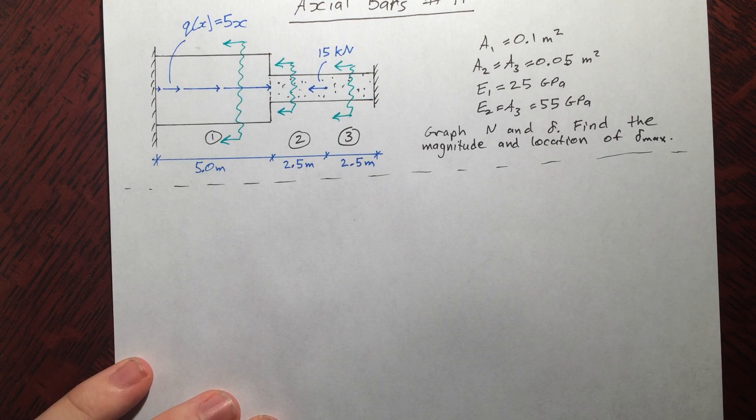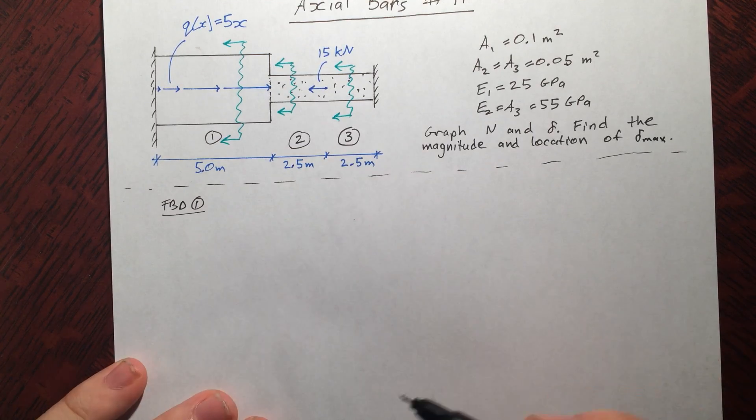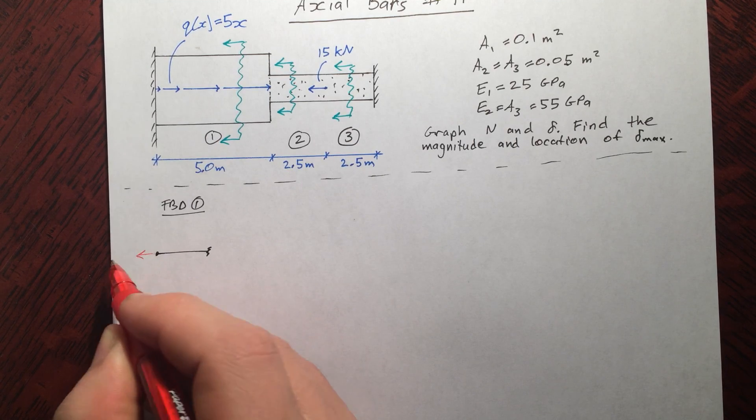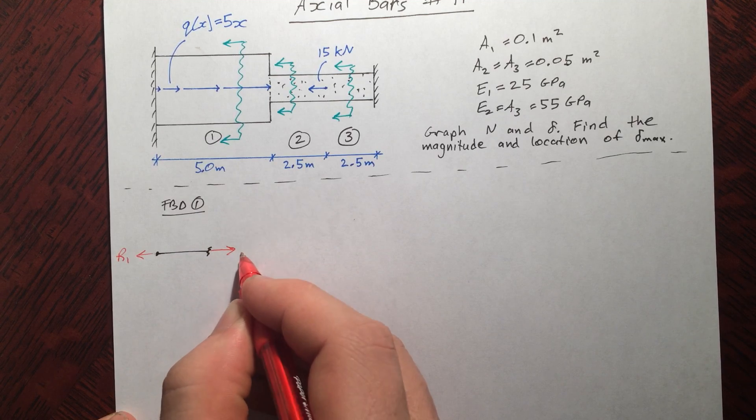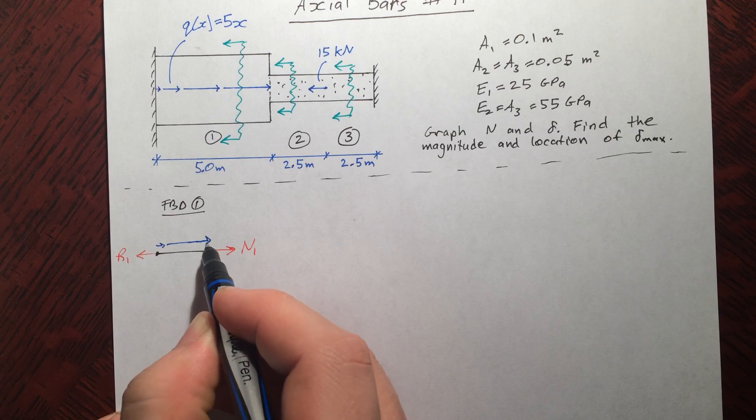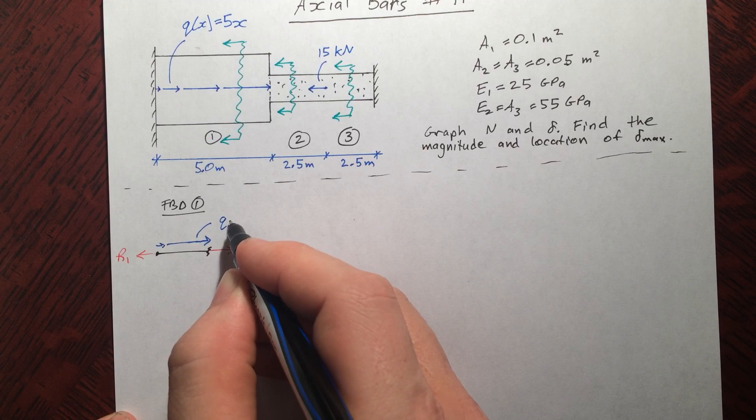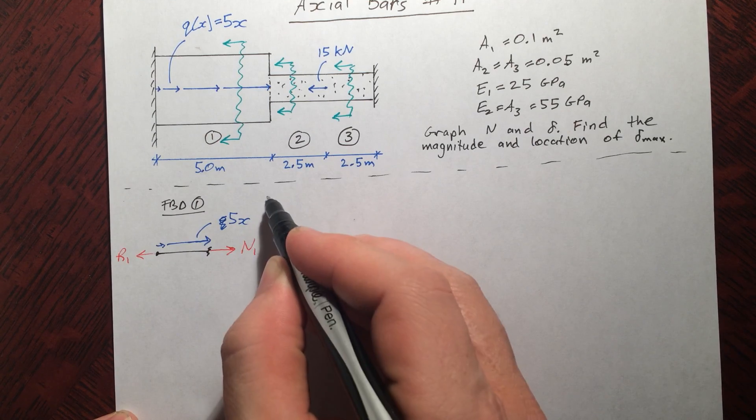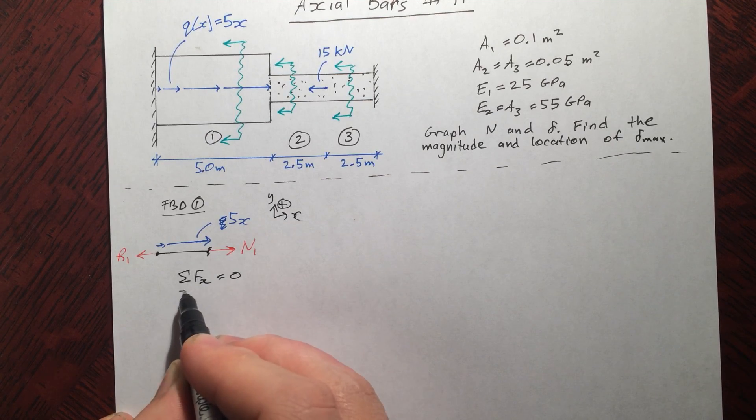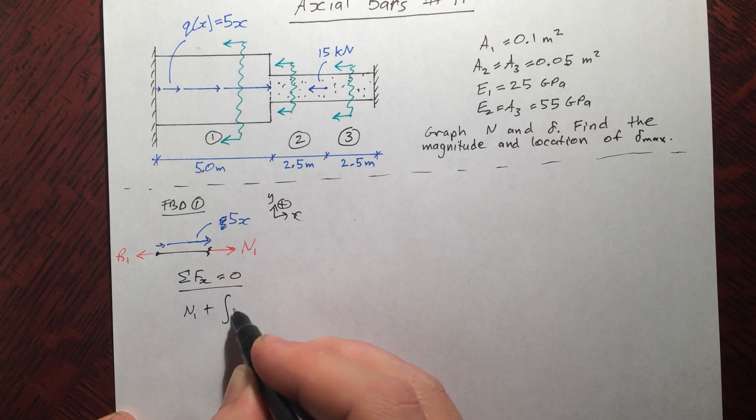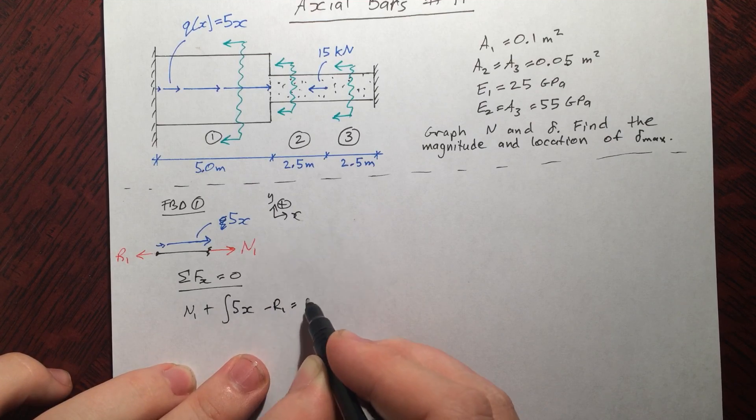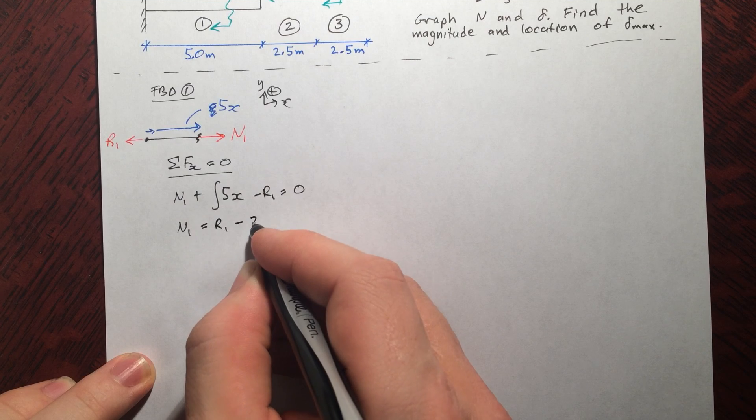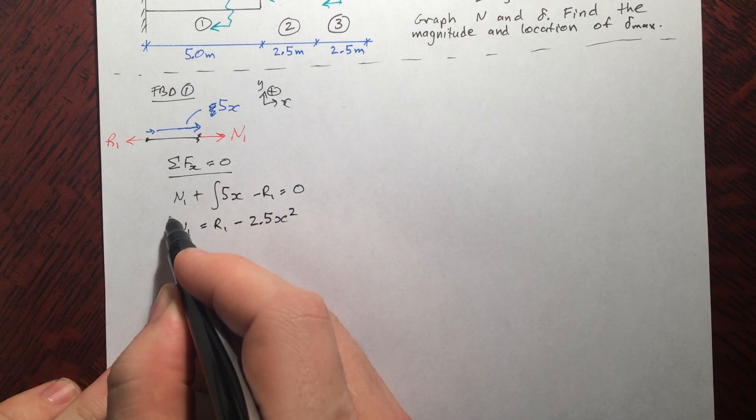So let's take a look at the first free body diagram. And then of course we're going to have the reaction here, let's just call it R1, N1. And then you're going to have some bit of distributed load here, 5X. Doing what we always do, sum of the forces X equals zero. We see that N1 plus the integral of 5X minus R1 equals zero. And we have to integrate this because this is the distributed load. So in this case now, N1 equals R1 minus 2.5X squared. This is N1.